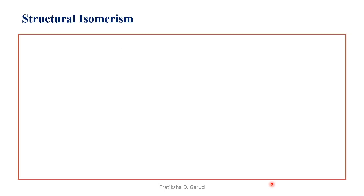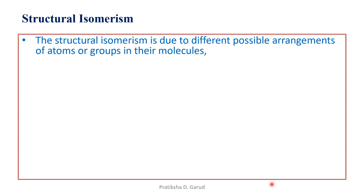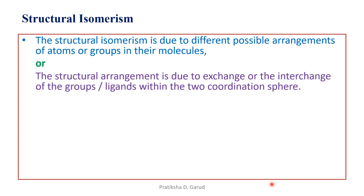So let's start with structural isomerism. Structural isomerism is due to the different possible arrangement of atoms or groups in their molecules, or we can say it is due to the interchange of coordinating groups or ligands within the two coordination spheres. We know that in a complex there are two coordination spheres — the inner, which is present in the square bracket, and the outer, which is present outside the square bracket. When there is an interchange between these two spheres, it results in the formation of structural isomerism.